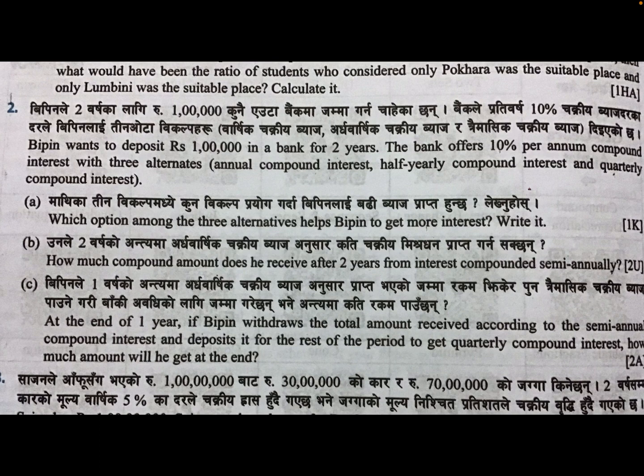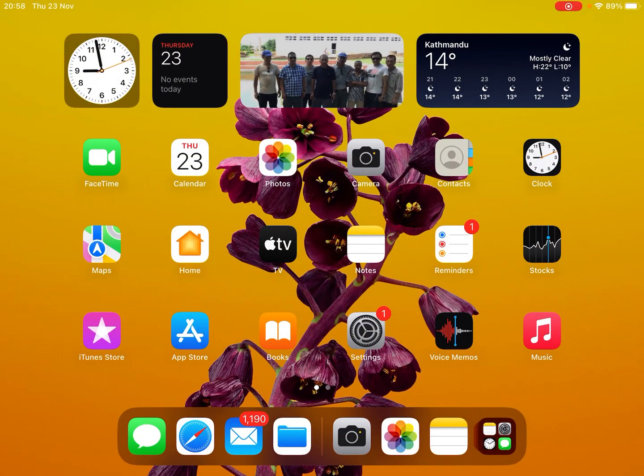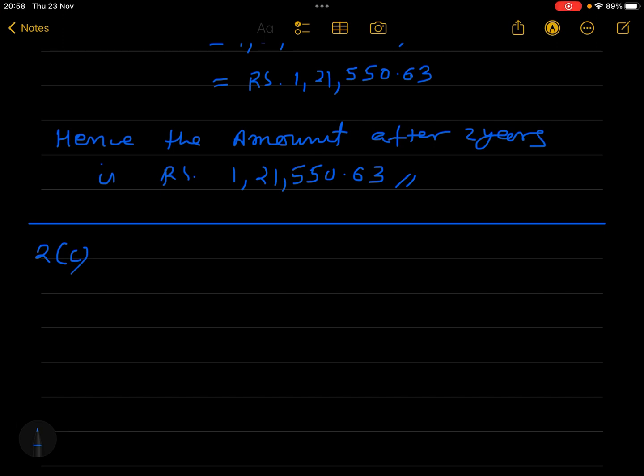Look, in number B he withdraws money only after two years. But instead of that, if he withdraws the money after one year and deposits it again in quarterly compound interest, then how much amount will he get? That is the question.